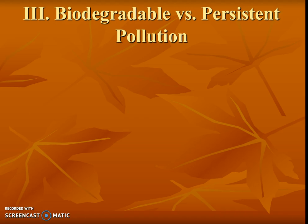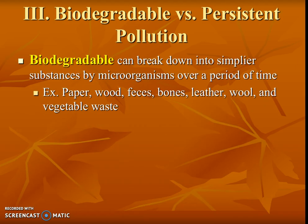There are two other categories of pollution. One type is biodegradable. Biodegradable pollution in the long term will start to break down into simpler components by microorganisms over some time. These are things that we can compost. We don't always put these in a place where they're going to biodegrade, but if we're careful we can set it up so that they will break down. This is not as harmful in the long run — it can be thought of as pollution in the short term.